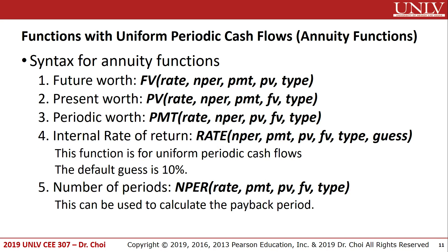Here are the syntax for annuity functions. For future value, type: =FV(rate, nper, pmt, pv, type). To calculate the present value, type: =PV(rate, nper, pmt, fv, type).